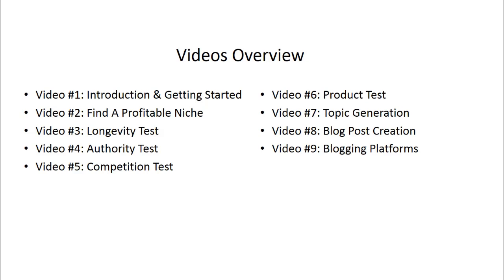Here is a quick overview of what's inside this video course. Video one is the introduction. Video two is finding a profitable niche. Video three is a longevity test. Video four is an authority test. Video five is a competition test. Video six is a product test. Videos one through six will help you figure out if you have a profitable niche that can actually last for a decade or more. Video seven covers topic creation and generation. Video eight covers blog post creation. Video nine covers blogging platforms. We're not going to talk about how to create a blog right away because most people create a blog, invest money into theme and branding, and then don't know what to do. We're going to combat that to make sure you don't make those same mistakes and that you're able to succeed.